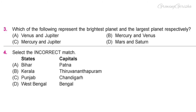Question 3. Which of the following represent the brightest planet and the largest planet, respectively? Option A: Venus and Jupiter.